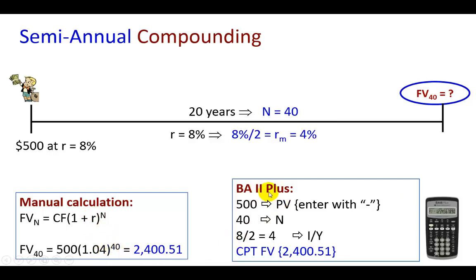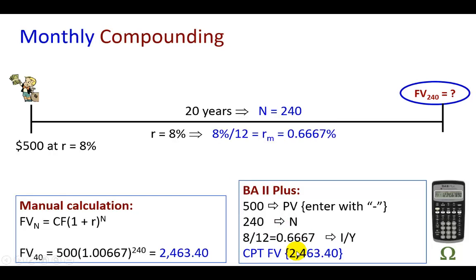Likewise, if you're using the BA II Plus, for N you're going to put in 40. And for I over Y, you're going to put in 4. And this is going to calculate the correct value.